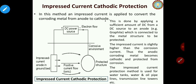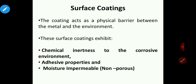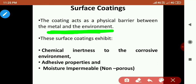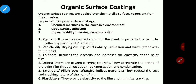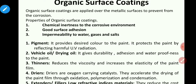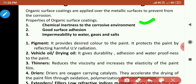Now let us quickly take an overview of surface coatings. Surface coatings act as a physical barrier between the metal and the environment. There are three important properties: they must be chemically inert toward the corrosive environment, they must have good adhesive properties, and they must be moisture impermeable. For organic surface coatings, these same three properties apply: chemical inertness, good adhesion, and impermeability to water, gases, and salts.